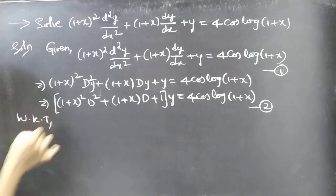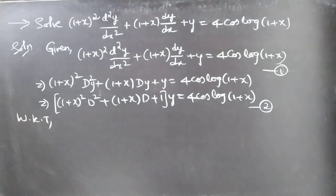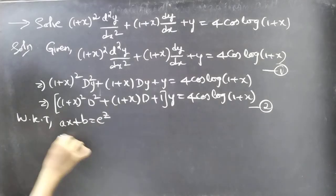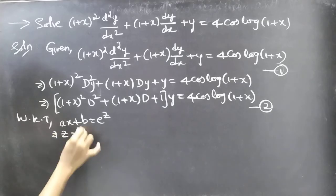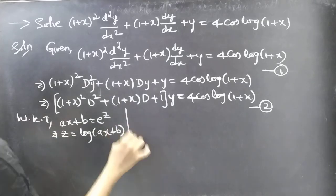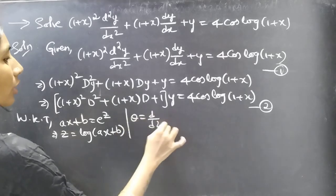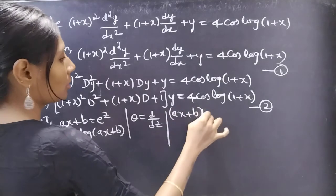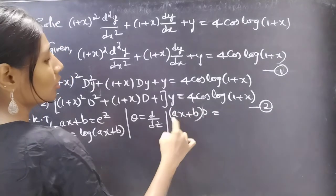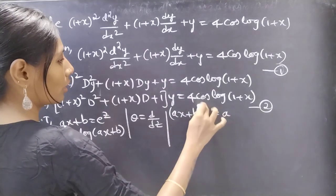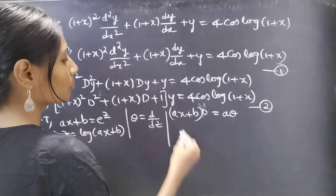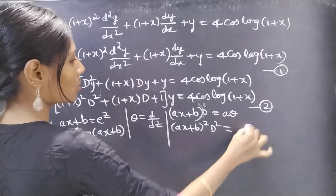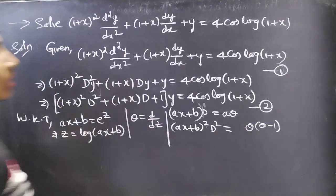Legendre's equation procedure says that (ax+b) can be replaced by e^z, so z = log(ax+b), and θ is a differential operator whose independent variable is z. Then (ax+b)·D can be replaced by a·θ, and (ax+b)²·D² can be replaced by a²·θ(θ−1).